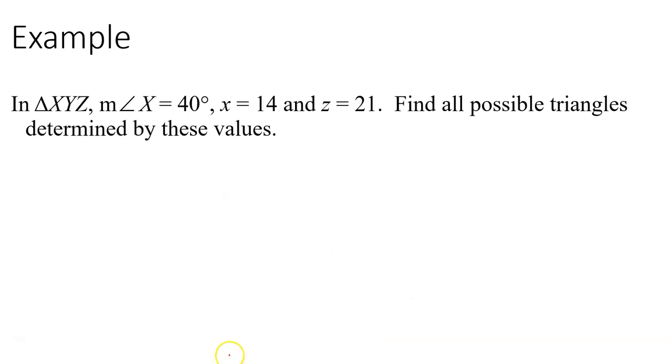So here's a triangle X, Y, Z. I gave you an angle. I gave you two sides, find all possible triangles determined by these values. So if you want, you can actually pause the video here, try this problem on your own, and then come back and I'll solve the problem out. You can see how you did. So if you want to pause this now, otherwise I'm going to run right into the answer.